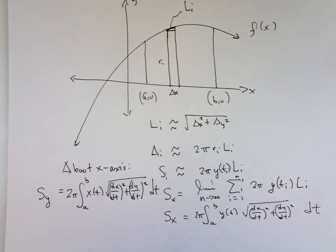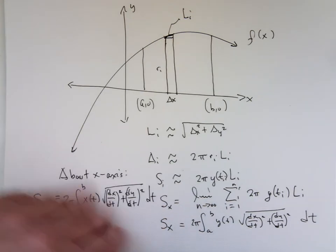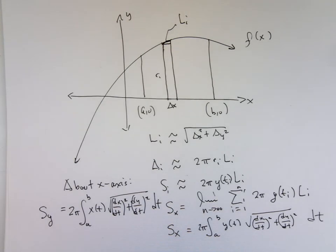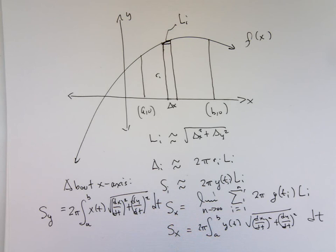Anybody know the surface area of a sphere of radius R? Four pi R squared — it's kind of interesting because it turns out to be the derivative of the volume four-thirds pi R cubed, which makes sense if you think about how a volume increases by a surface area. They're all related. Let's derive that formula.